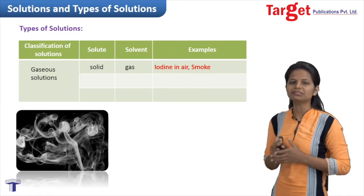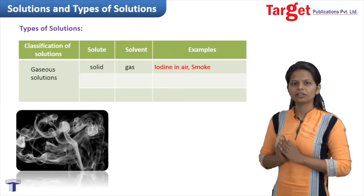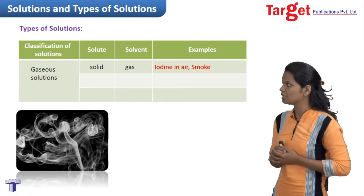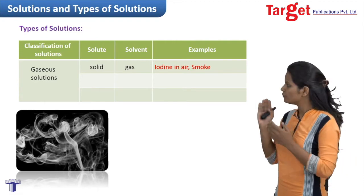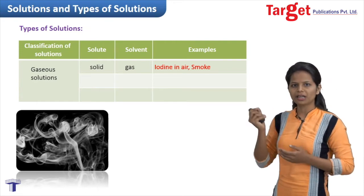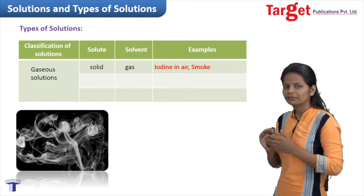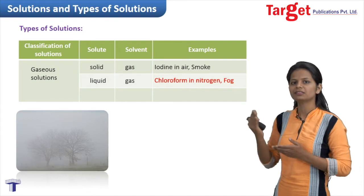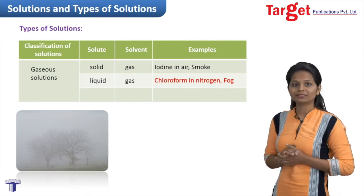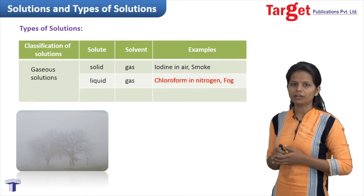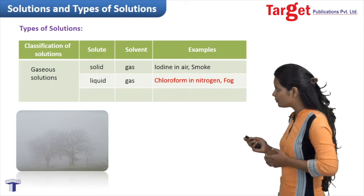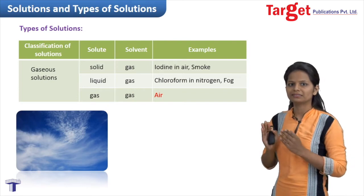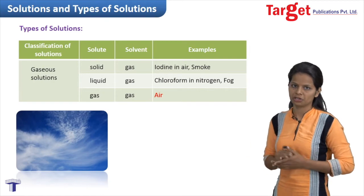The final category is gaseous solutions — solutions wherein the solvent is present in gaseous state. The first example is solid dissolved in gas, such as smoke wherein dust particles are present in air, or iodine present in air. The next type is liquid-in-gas, for example chloroform in nitrogen gas, or simply moisture wherein small droplets of water are present in air. The final type is gas-in-gas; the simplest example is air, which is a mixture of different gases like oxygen and nitrogen.